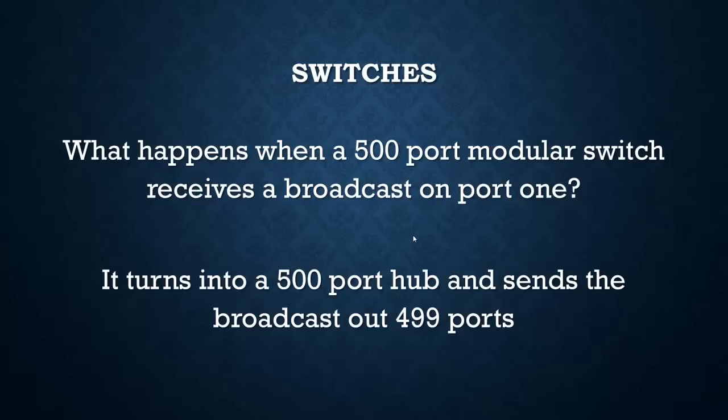Remember, a hub sends everything it receives out all the other ports. So if it's a 12-port hub and something comes in on port 1, it then transmits from port 2 through 12. But when a switch receives it - let's say it comes in port 1 as destined for port 12 - then it comes in one and goes out 12, and the other ports are unaffected.